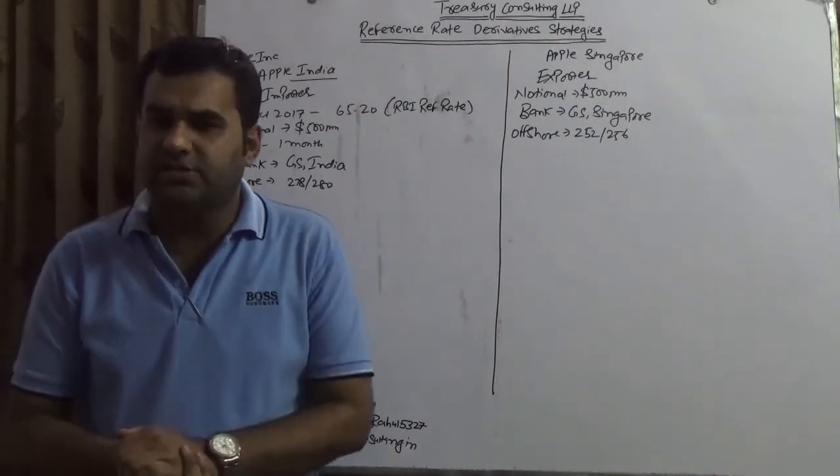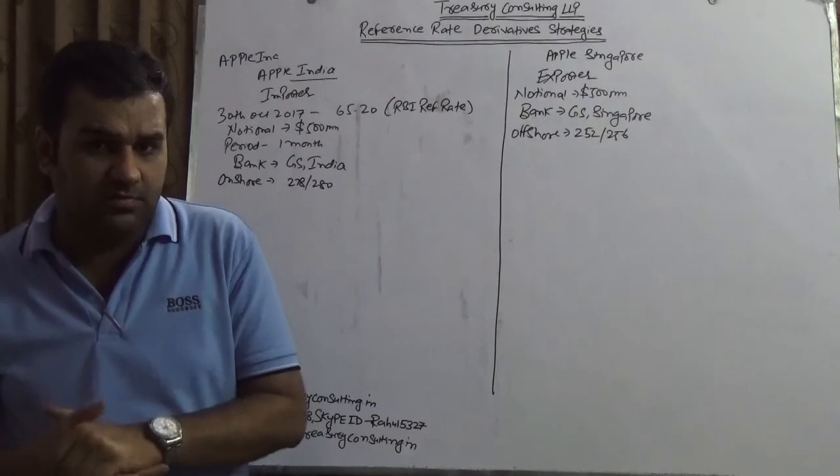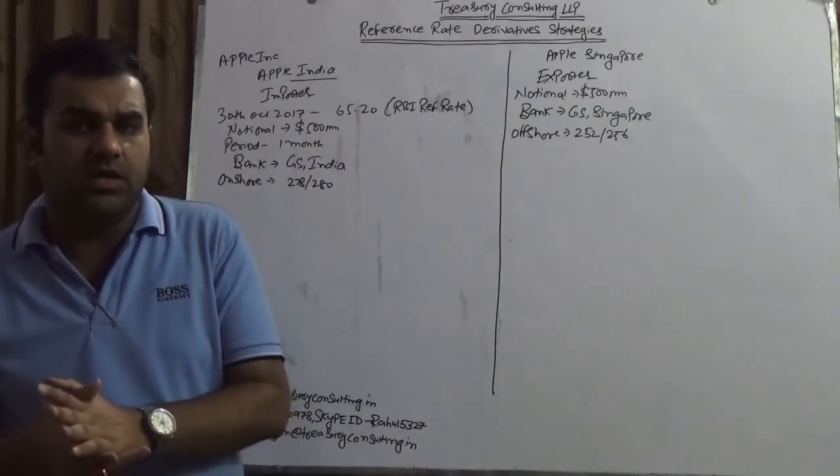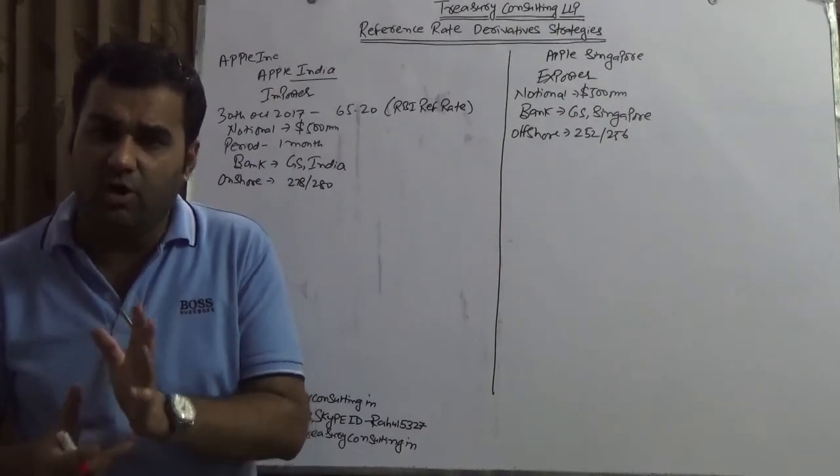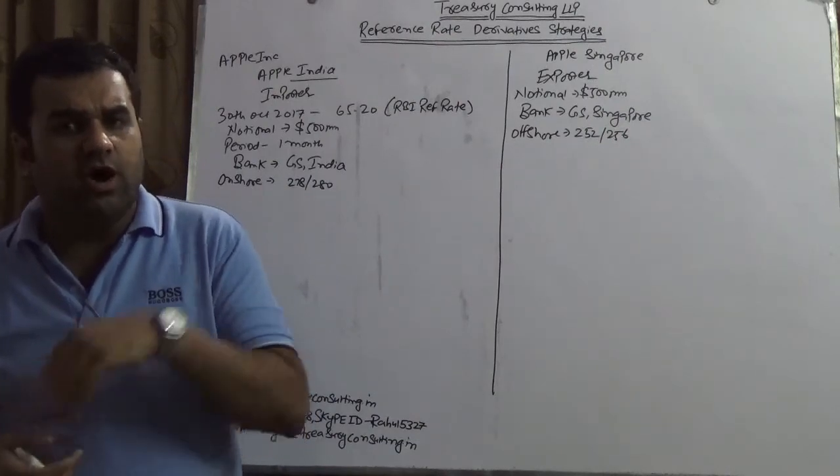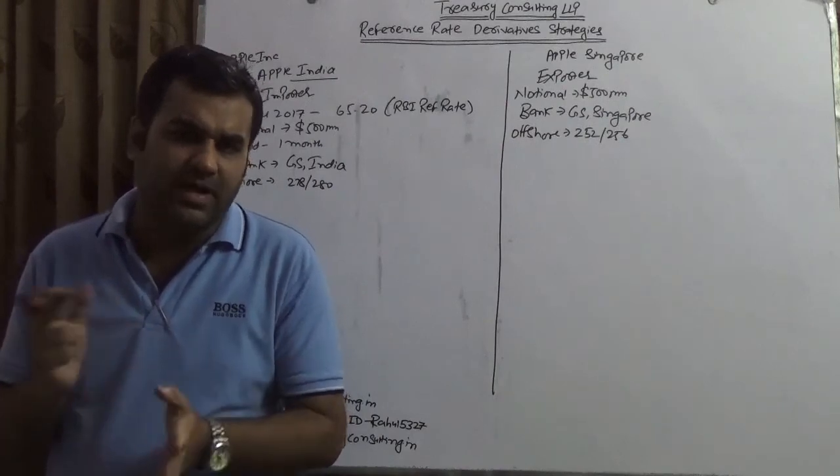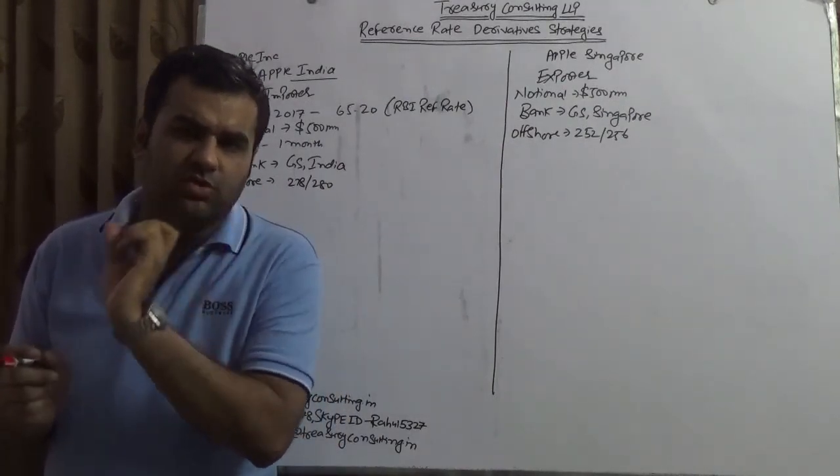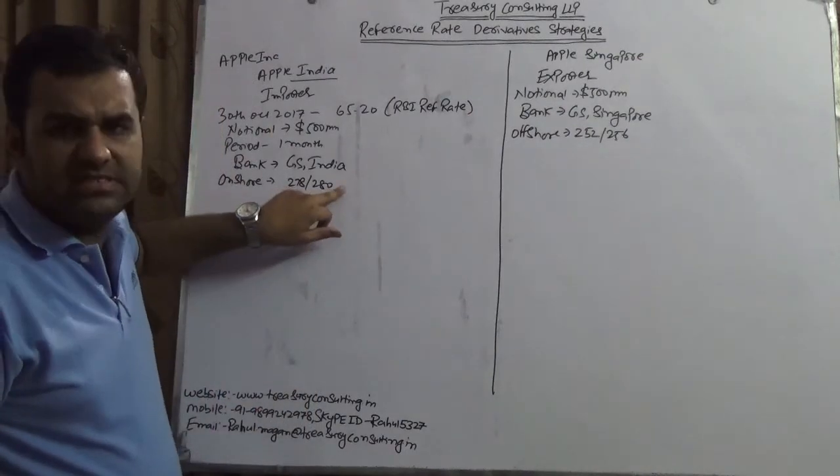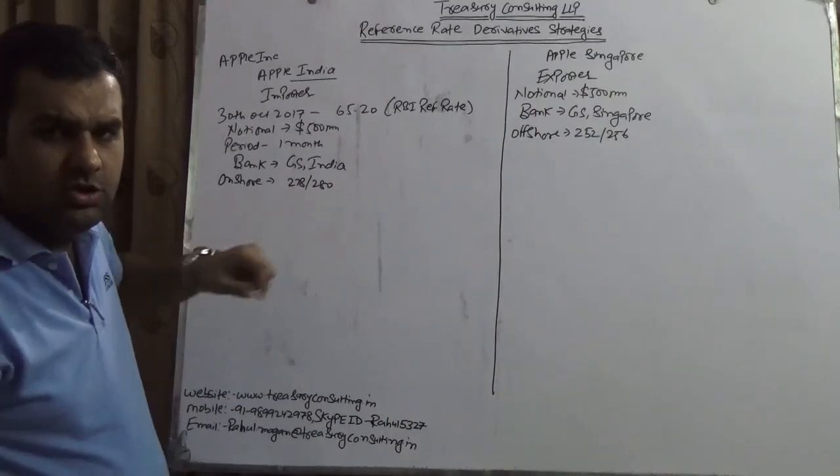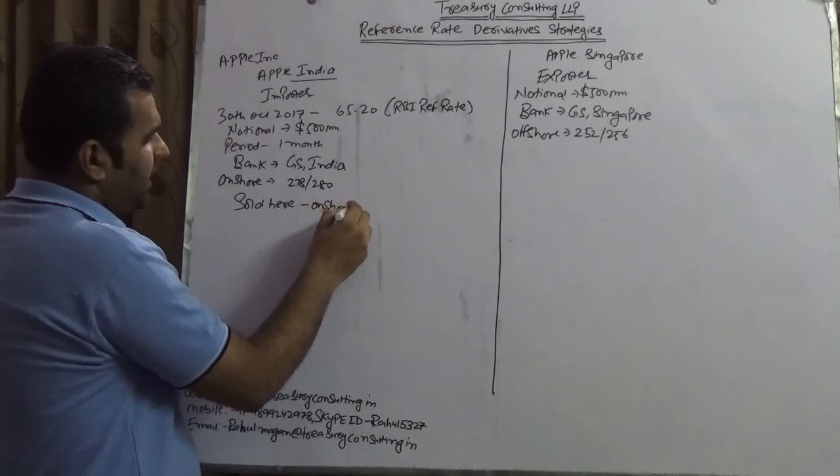There are many people watching this video who tend to make assumption that onshore would always be better than offshore—you're wrong, boss. It depends upon market condition. Sometimes onshore and offshore both have equal rate, and there are times when onshore and offshore have a wide difference. When I was the corporate treasurer for EXL, there was a time when the difference between onshore and offshore was more than one rupee—the offshore was giving a premium of one rupee 25 paisa more than onshore. So don't think onshore is always greater than offshore. Since sitting today onshore is better than offshore, so Apple would have sold here and Apple would have bought here.